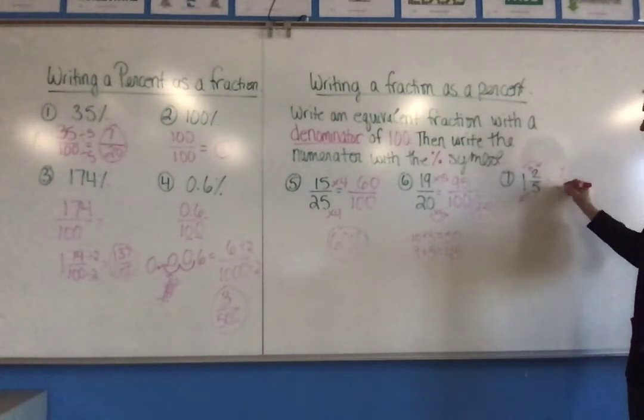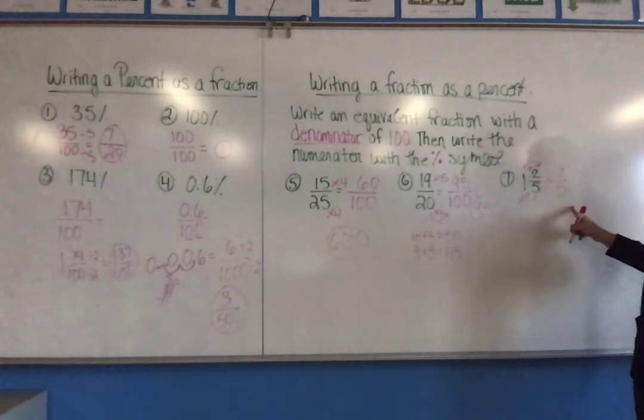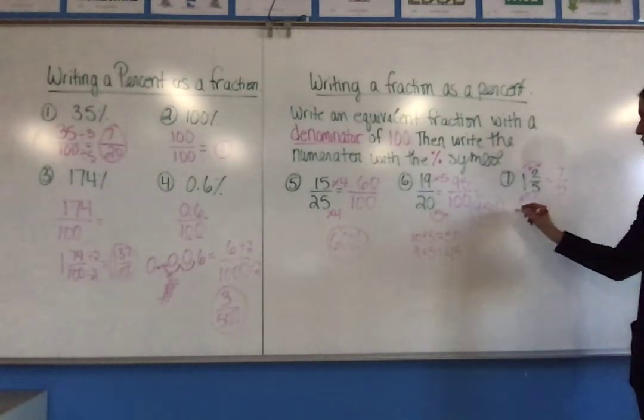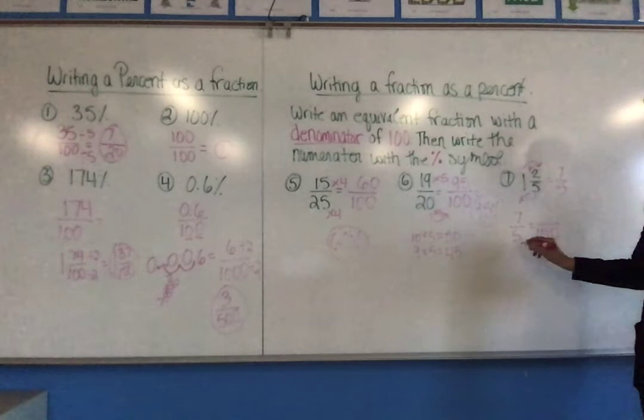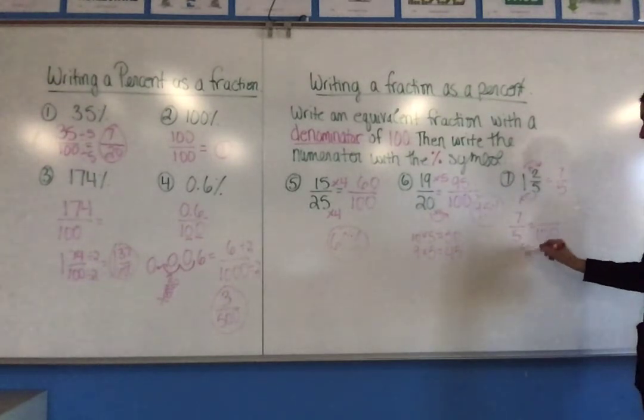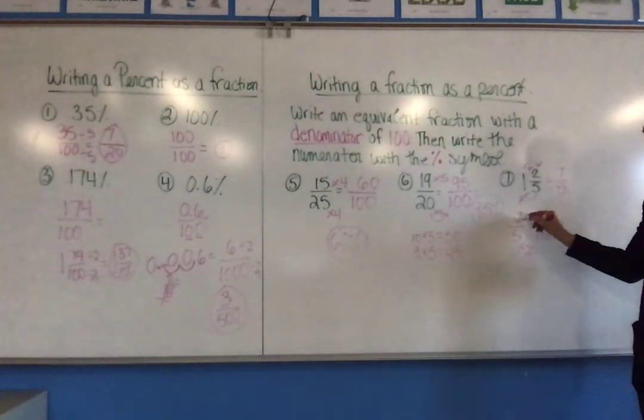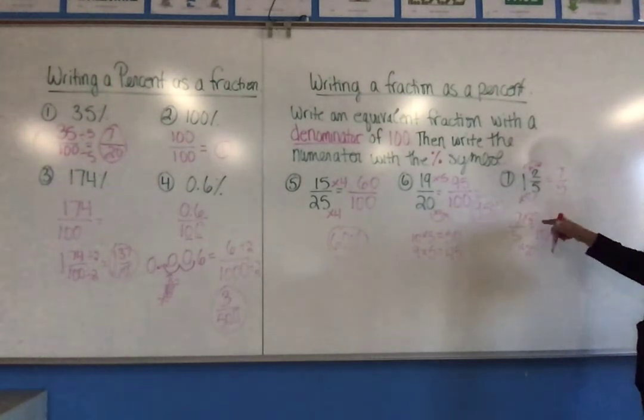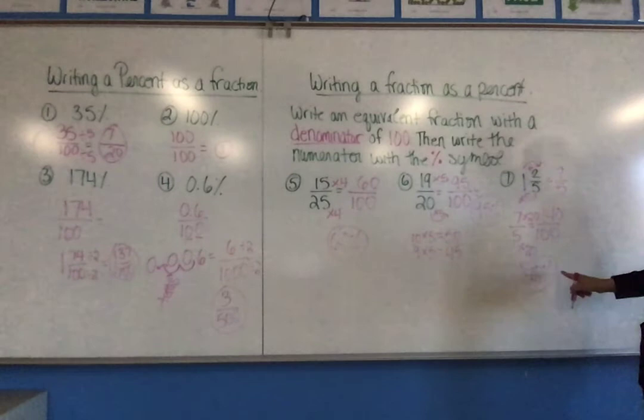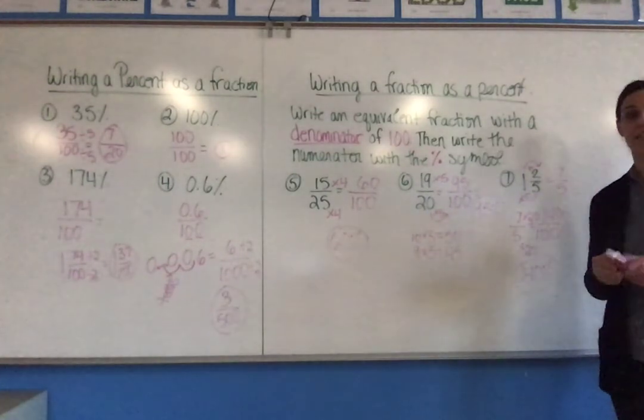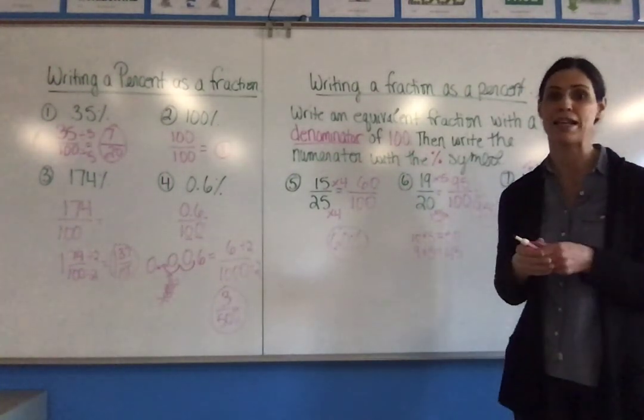So that would be 7/5. Once I have it as an improper fraction, I'm going to do the same thing and write an equivalent fraction with the denominator of 100. 5 times 20 is 100, so I have to multiply the numerator times 20 as well. And 7 times 20 is 140, so my percent would be 140%. Don't forget to include the percent sign. Otherwise, it's just a whole number and not a percent.